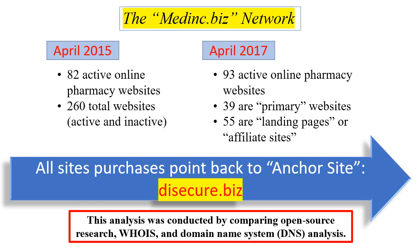Two years later, as they were getting ready to launch this particular case, they updated it: 93 active sites, 39 of which were primary websites, and 55 which were either landing pages or affiliate sites. What's important is that they were all tied back to an anchor site. The research that enabled that is all open-source investigation using WHOIS, domain name, server analysis, and source code — which allowed them to show that all sites were essentially mirrors of each other.